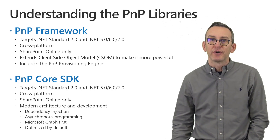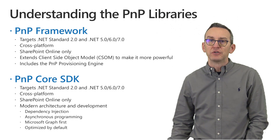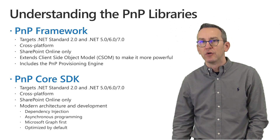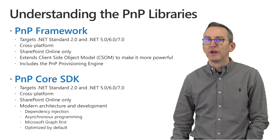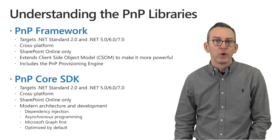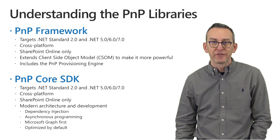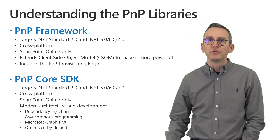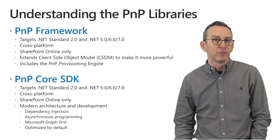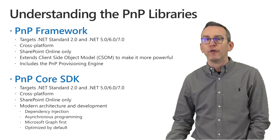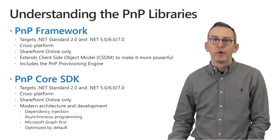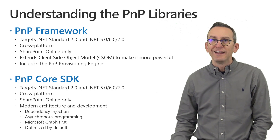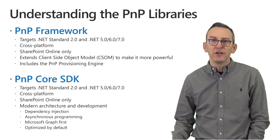Internally, PnP Core SDK relies on Microsoft Graph in order to have a Graph-first approach, meaning that whenever you consume SharePoint or any other Microsoft 365 workload it gives priority to Microsoft Graph. If something is not yet available in Microsoft Graph it will fall back to the SharePoint REST APIs. So it is fully disconnected from CSOM and relies only on REST and open authorization.